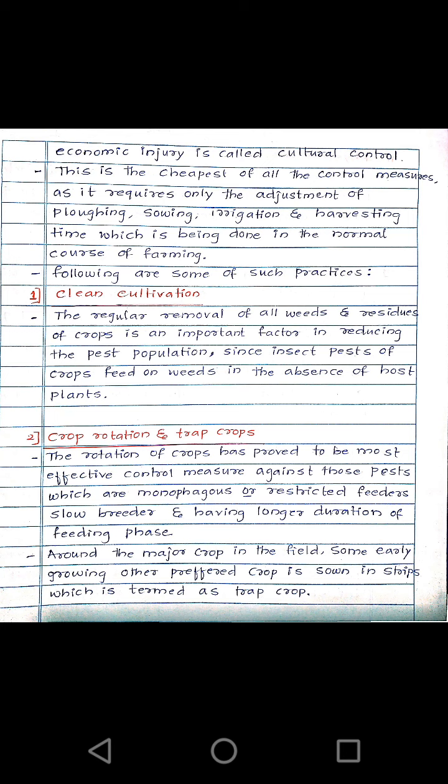The methods used in cultural control to reduce insect pest populations are: clean cultivation, crop rotation, tilling or cultivating the soil, use of resistant varieties, use of clean seeds, variation in sowing and harvesting time, and mixed cropping.